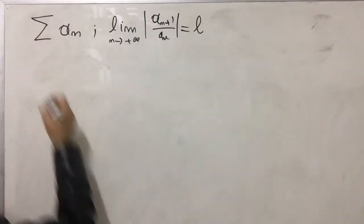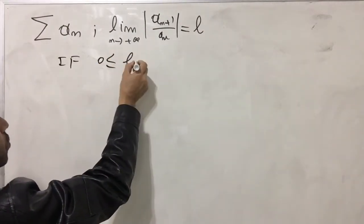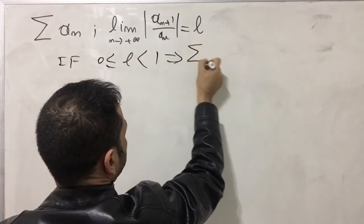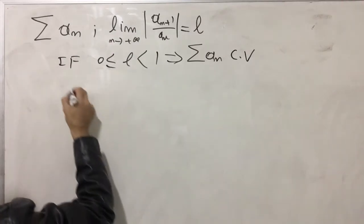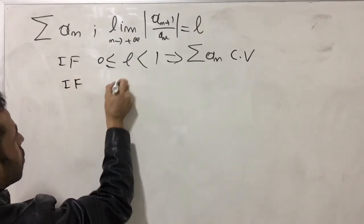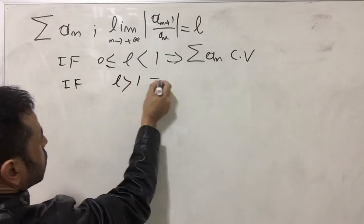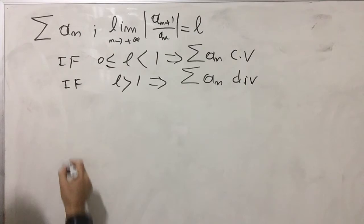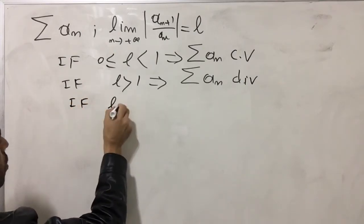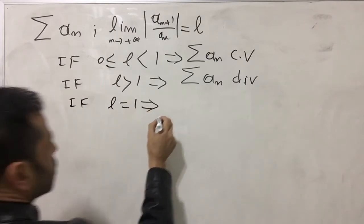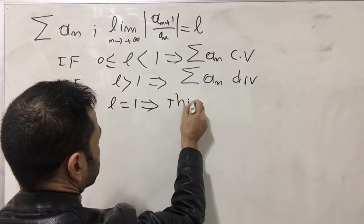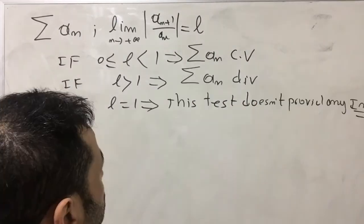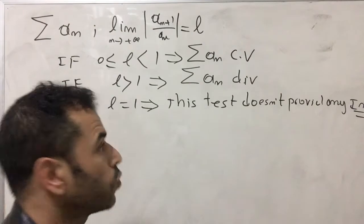Now we go through three cases. If L is between 0 and 1, this implies the series Σa_n is convergent. If L is strictly greater than 1, this implies the series Σa_n is divergent. The third and last case: if L equals 1, this test does not provide any information. I'm now moving on to the proof.